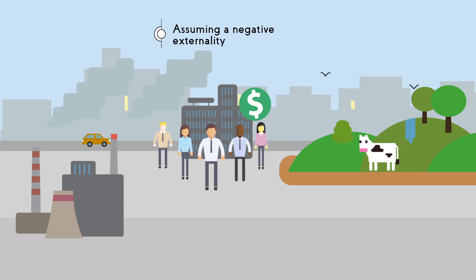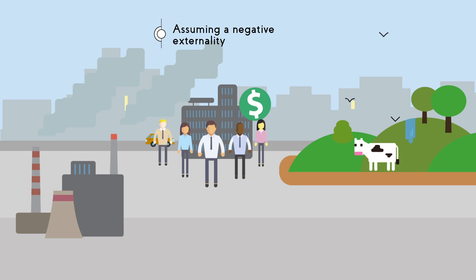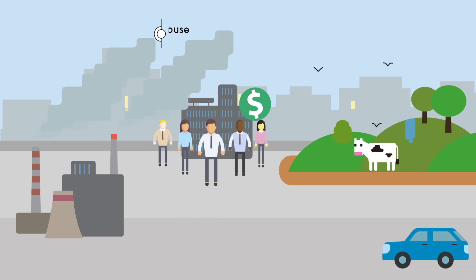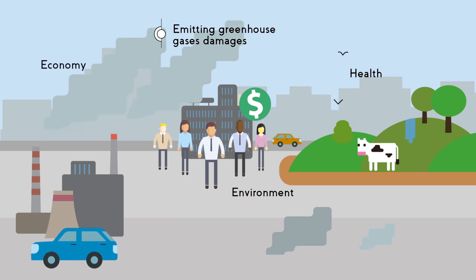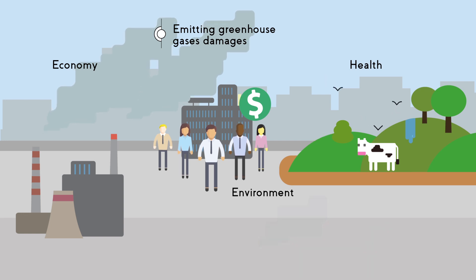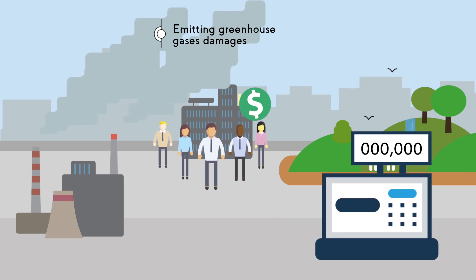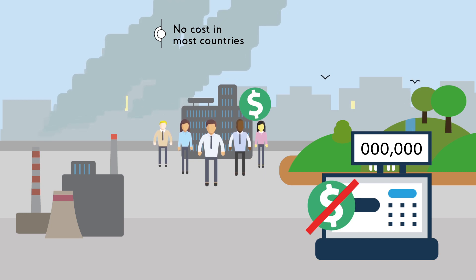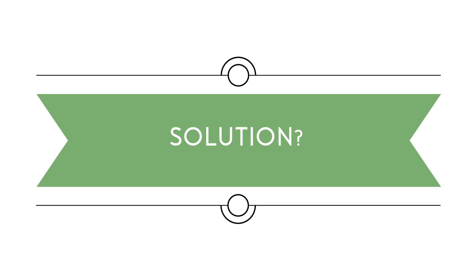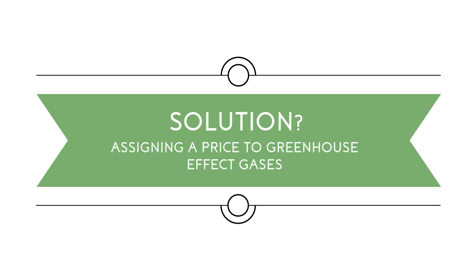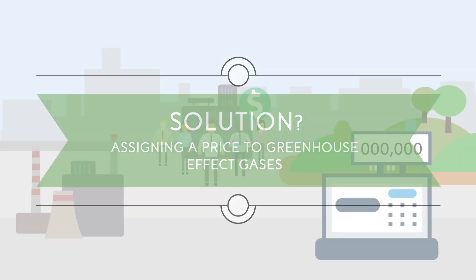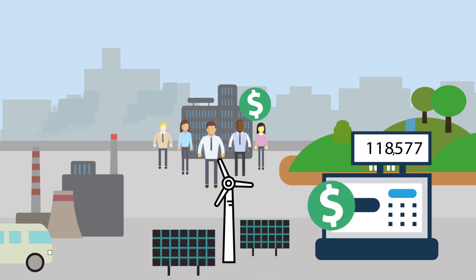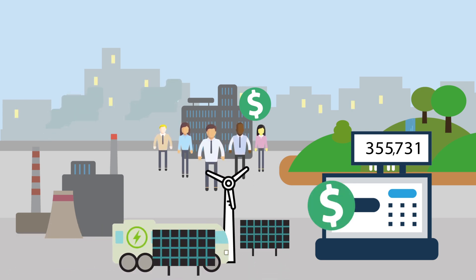Today, we know two things. The first is that emitting greenhouse gases damages our health, the environment, and thus the economy. And the second is that the emission of these gases is continuing in most countries without any cost to those responsible. Assigning a price to greenhouse effect gases will help redirect investment by government and companies toward less polluting production and consumption models.